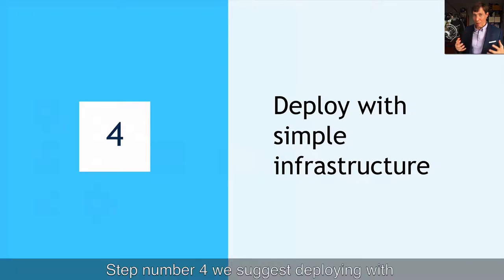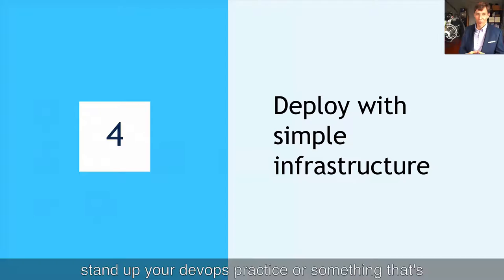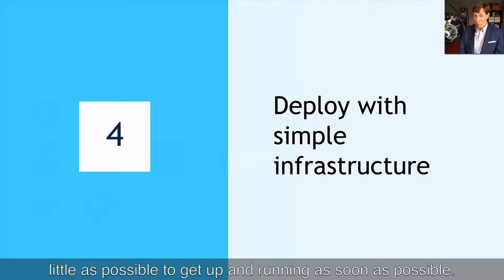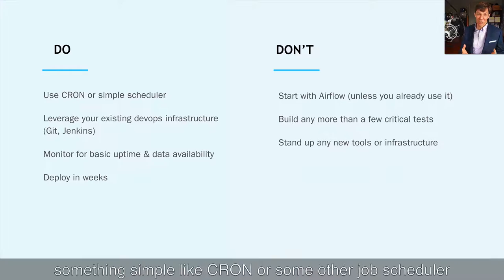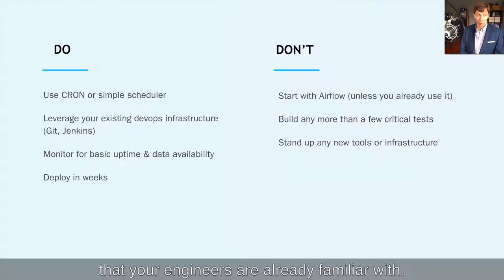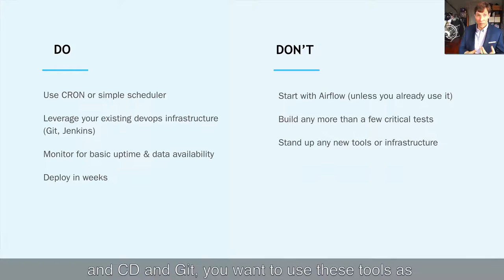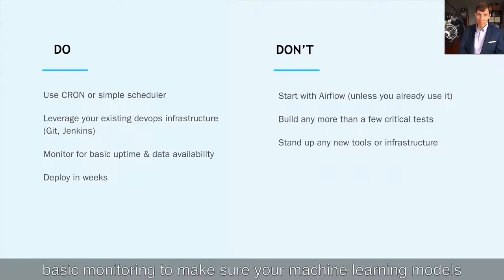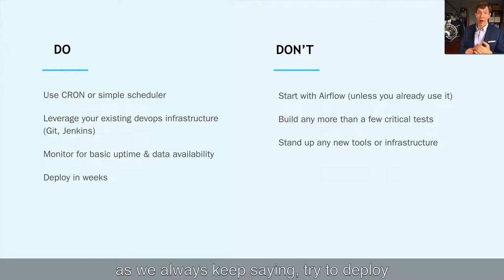Step four: apply simple infrastructure. When you put your machine learning models into production, this isn't the time to stand up a complex DevOps practice. Use what you already have and as little as possible to get up and running quickly. If you already have Airflow managing a data engineering pipeline, use that. Otherwise, use something simple like Cron or another job scheduling application your engineers already know. If you have Jenkins for continuous integration and continuous deployment, and Git, leverage those tools. Set up basic tests and monitoring, but don't build a ton of new support infrastructure until you see how everything's working. Try to deploy in weeks.